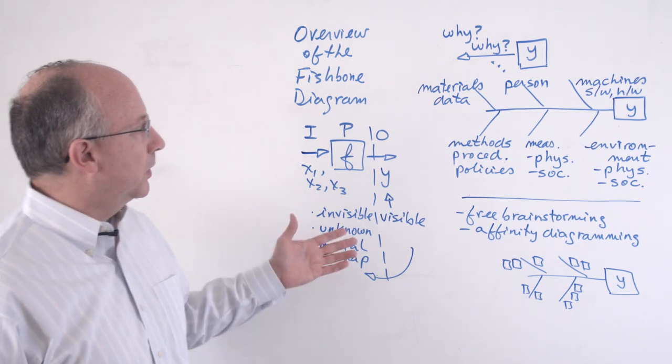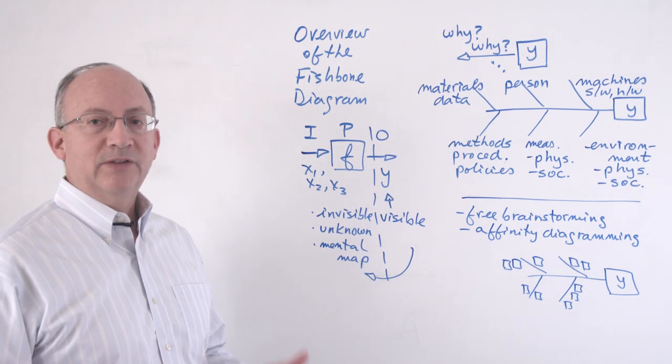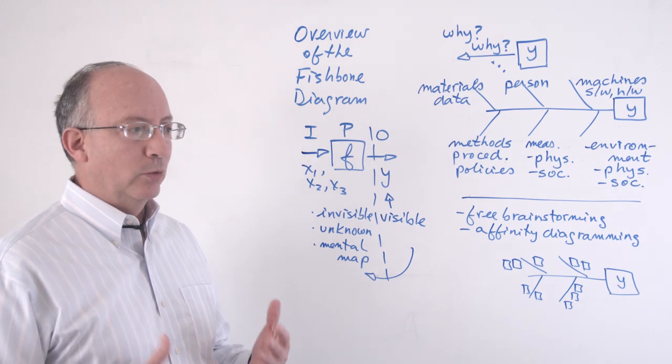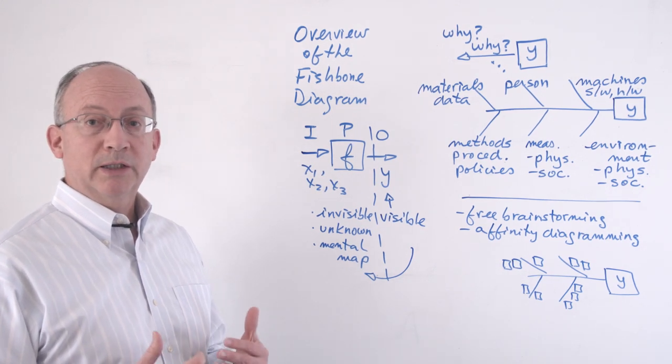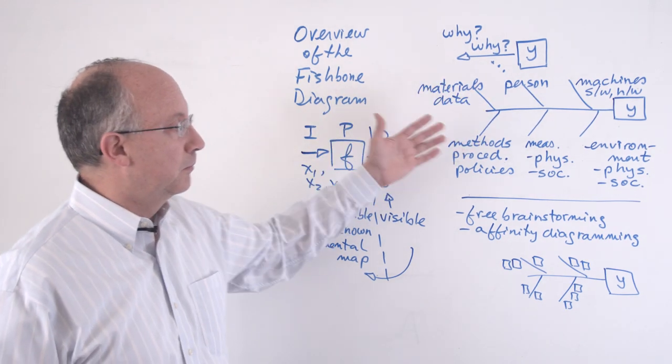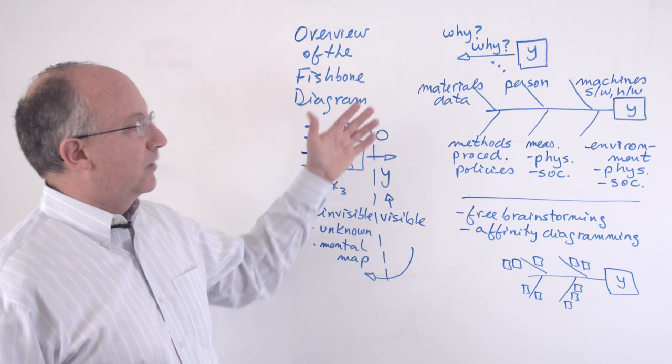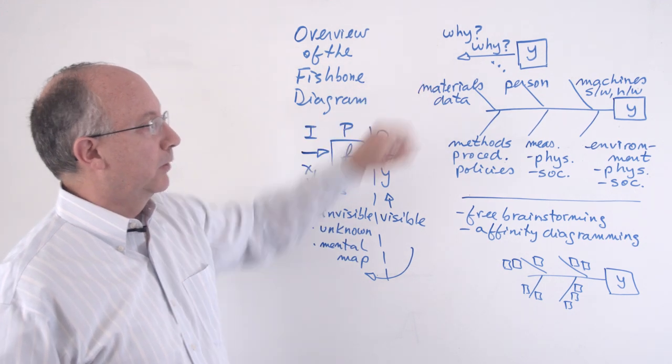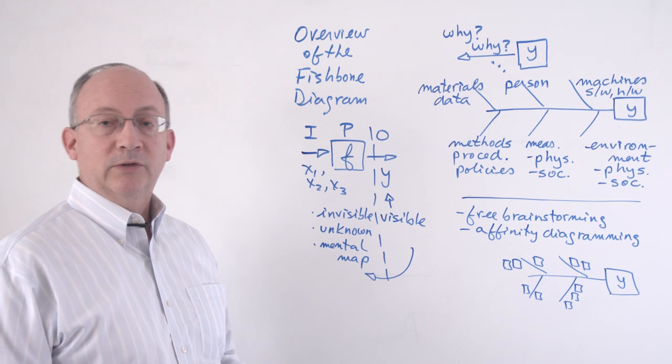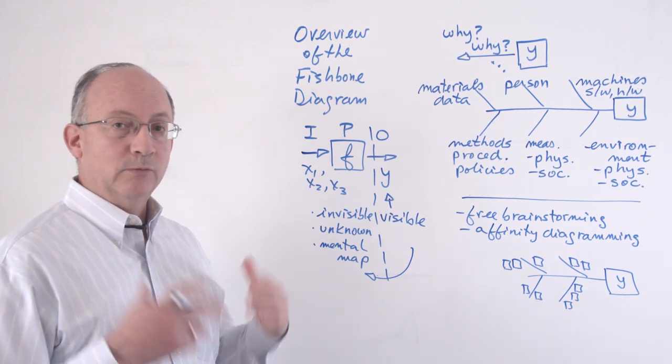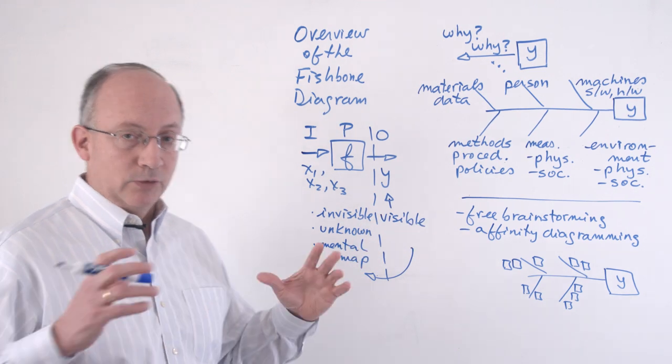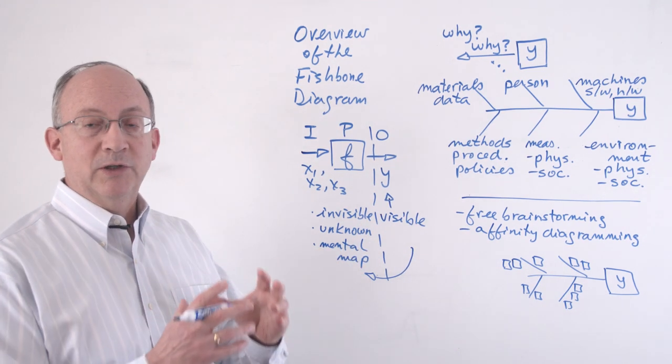So to summarize, the Fishbone diagram brings out the system of causes which is kind of embedded into the way in which we work. And the way in which we work is impacted by numerous factors. Ishikawa suggests these six broad categories. We get to these ones by asking why multiple times, and then another possibility once we become more skilled at doing this is just to have some free brainstorming and then an affinity diagram in order to put these ideas together in families of possible causes.